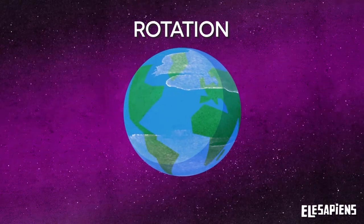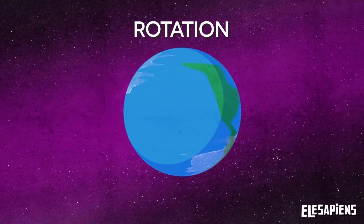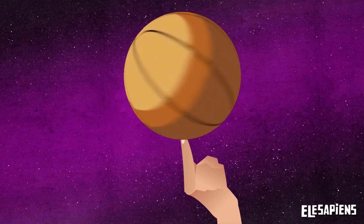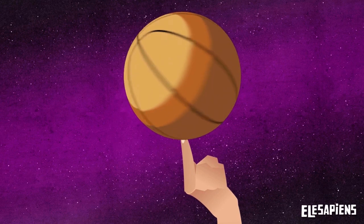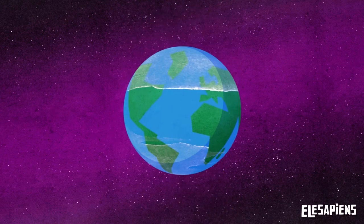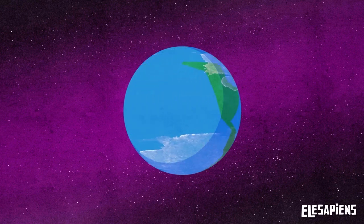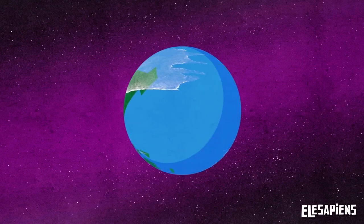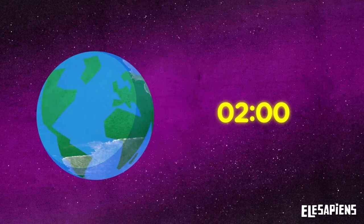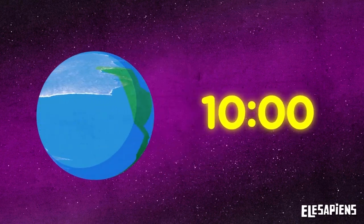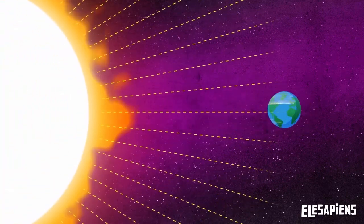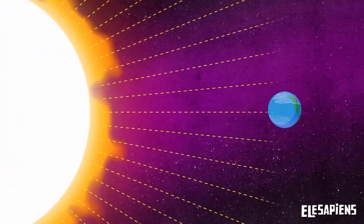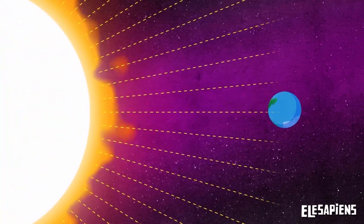The Earth rotates on itself like a huge basketball on an invisible finger. This movement is called rotation. One rotation of the Earth is one complete revolution of the planet on its axis, and it takes 24 hours to complete. This is the movement that produces the day and the night.